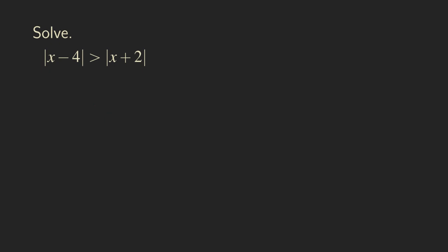Hello everyone, it's Wilson here. Today, let's talk about how to solve an inequality with two absolute values. Usually this is one that you won't see in a regular basic algebra textbook because usually in the textbook there is only one absolute value in the inequality, but now there are two. So what do we do to find the solution to this inequality?